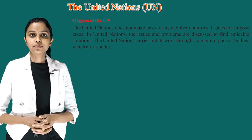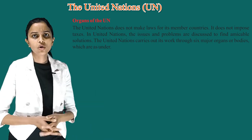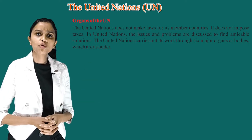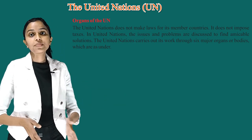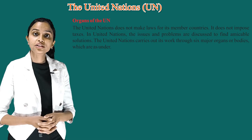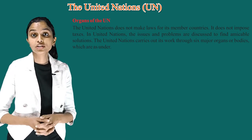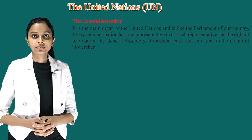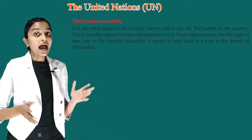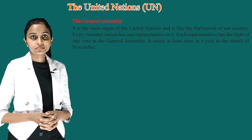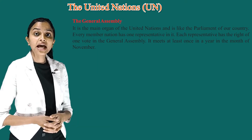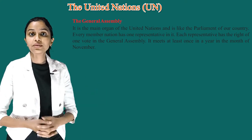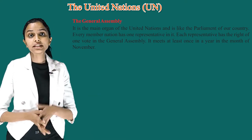Organs of the UN. The United Nations does not make laws for its member countries. It does not impose taxes. In the United Nations, issues and problems are discussed to find amicable solutions. The United Nations carries out its work through six major organs. The first is the General Assembly. It is the main organ of the United Nations and is like the parliament of our country. Every member nation has one representative in it, each with the right of one vote. It meets at least once a year in the month of November.